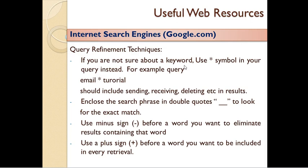If you are not sure about a keyword, use the asterisk (*) symbol in your query instead. For example, query: 'email * tutorial'. If you are not sure about the asterisk, you will find a word that fits in your query — like 'email * tutorial'.